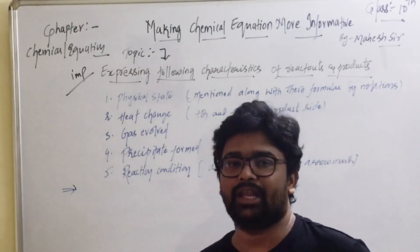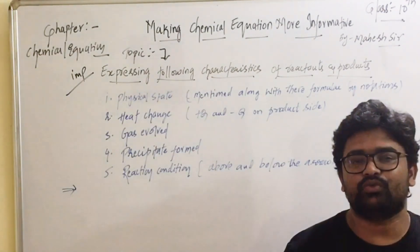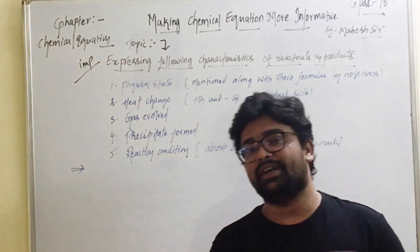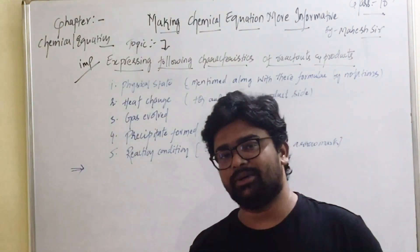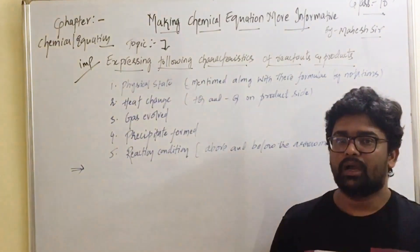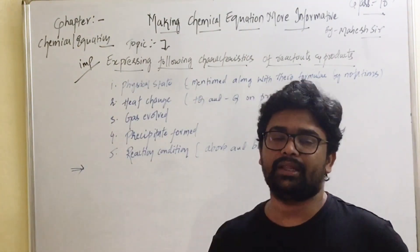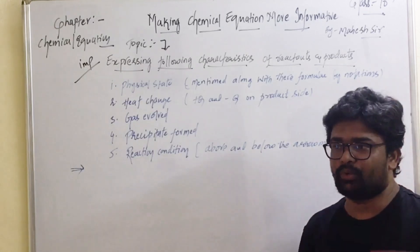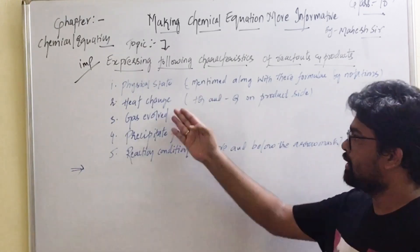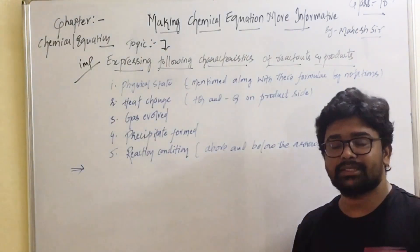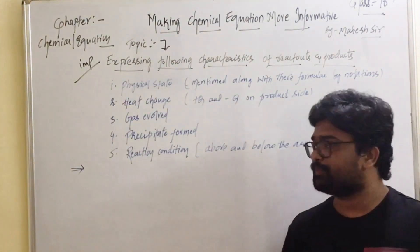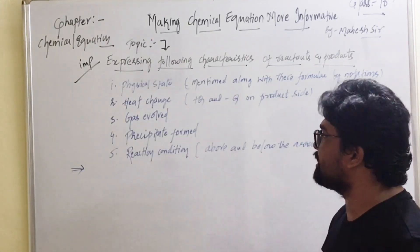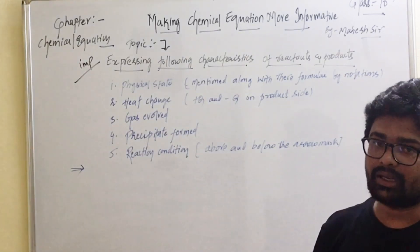Today's topic is about how to make chemical equations more informative. In the previous lectures, we studied how to balance chemical equations, how to make chemical formulae, and how to identify that a chemical reaction has occurred. Now in this lecture, we will study how to make a chemical equation more informative by representing physical states, heat change, gas evolved, formation of precipitate, and reaction conditions.